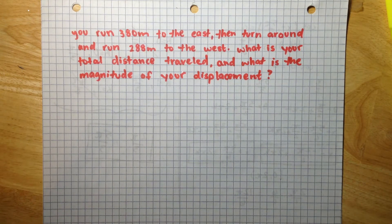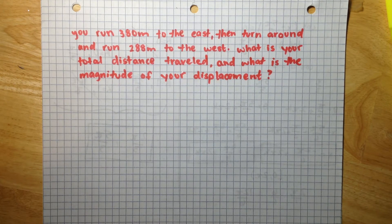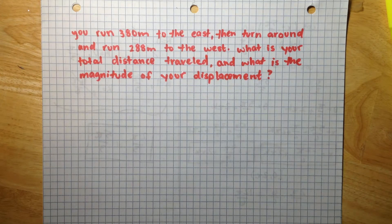You run 380 meters to the east, then turn around and run 228 meters to the west. What is your total distance traveled, and what is the magnitude of your displacement during the run described?